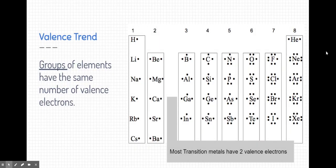Now, on the periodic table, there is a trend for valence electrons. If you look, each group of elements have the same number of valence electrons. Group number one has one valence electron. Group number two all have two valence electrons.